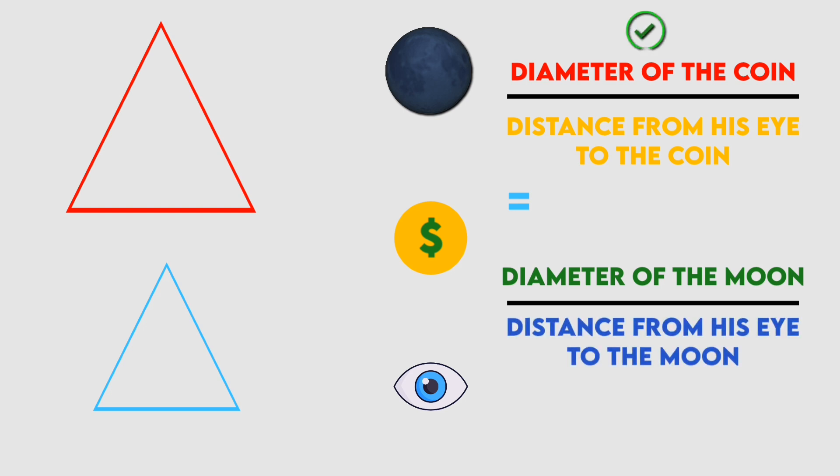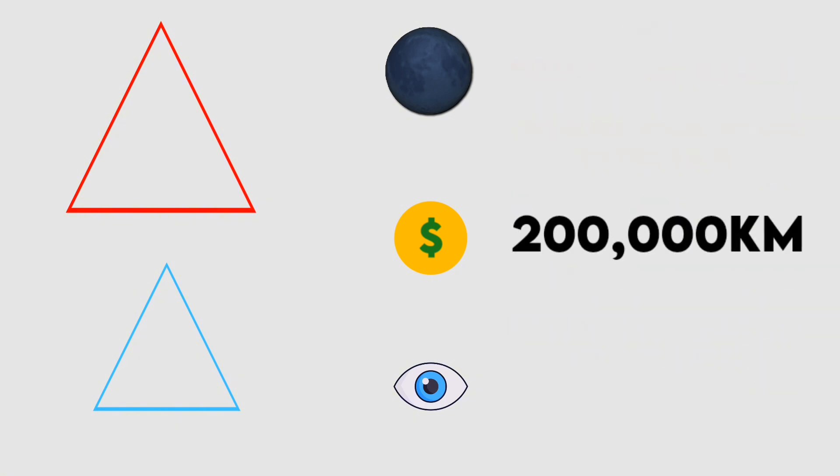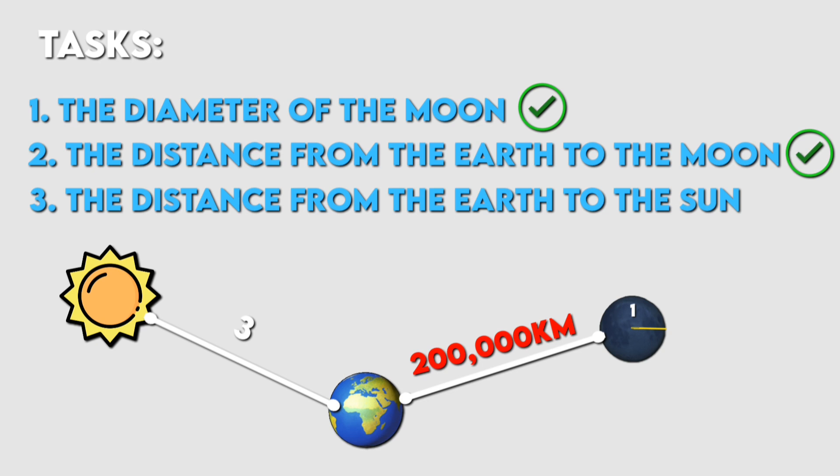Since he already knew the diameter of the coin, the distance from his eye to the coin, and the moon's diameter from his previous eclipse calculations, the only unknown value was the distance to the moon. Using a simple proportion, he calculated that the distance from the Earth to the moon was 200,000 kilometers. This completed his second task.